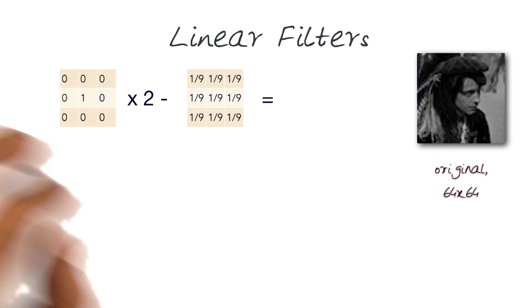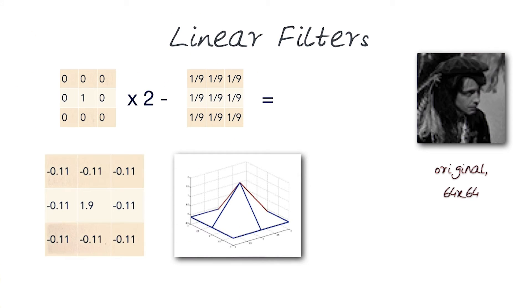But then after that, I want to subtract it by an average. So I can do this process. Remember the properties of convolution allows me to do something before I apply it to the image. I can actually do this process individually. And this would be my new kernel.